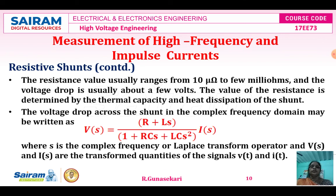The resistance value usually varies in the range from 10 micro ohms to a few milli ohms. The voltage drop is usually about a few volts only. The value of resistance R is determined by the thermal capacity and heat dissipation of the resistive shunt. The voltage drop across the resistive shunt in the complex frequency domain is: V(s) = [(R + Ls) / (1 + RCs + LCs²)] × I(s).